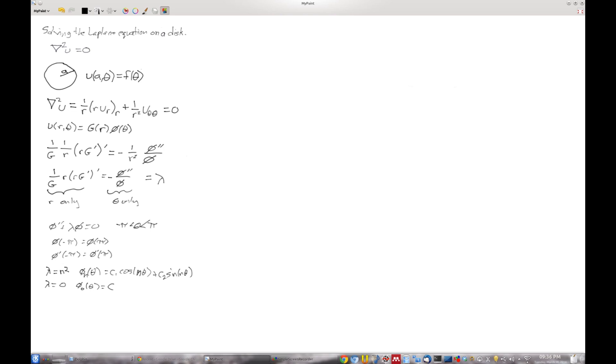But let's look at the other side of this. So if we know what lambda can be, now let's look at what these implications are for g. So let's go ahead and draw a little line there. Now for g, so we have that 1 over g times r times r prime equals, and then lambda, which in our case is either n squared or 0, so I'll put n squared here.